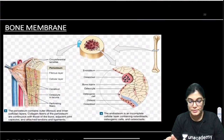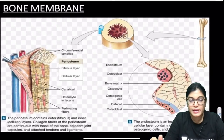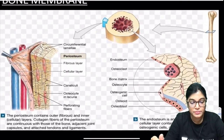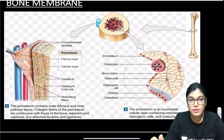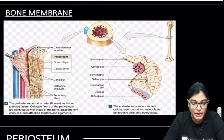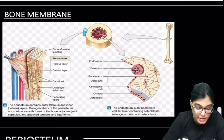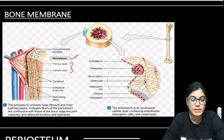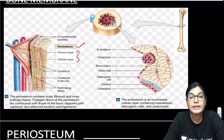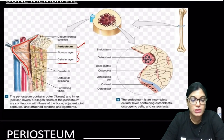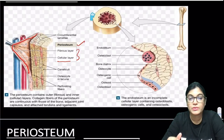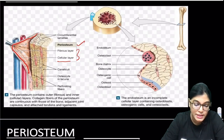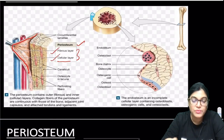Looking at the diagram: the outer layer is the periosteum, which is made of two layers. The inner layer is cellular — it has osteogenic secretion, forming new osteoblast cells of the bone. The outer layer of periosteum is fibrous. Inside, we can see osteocytes located in lacunae.